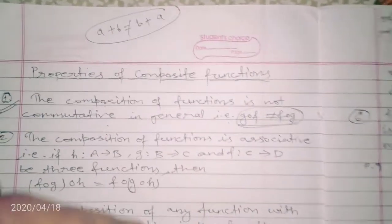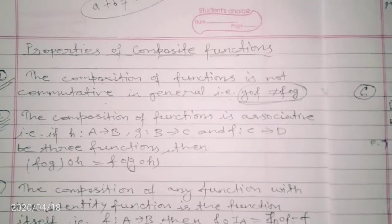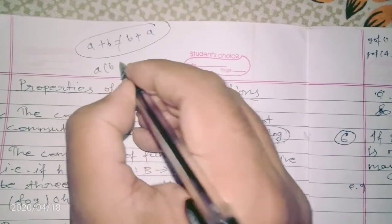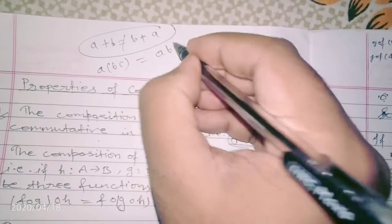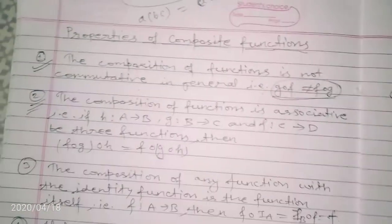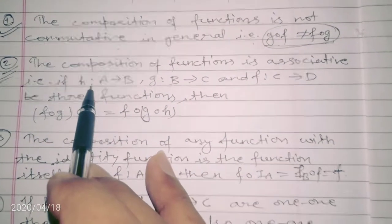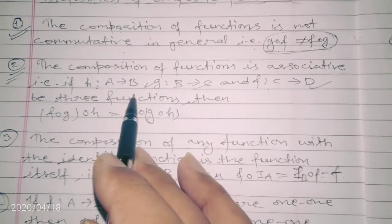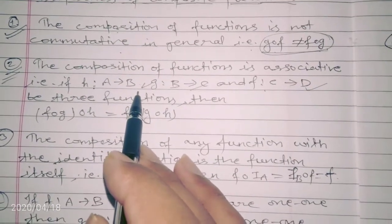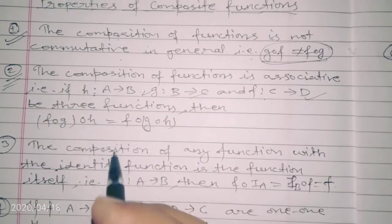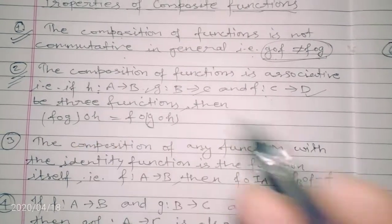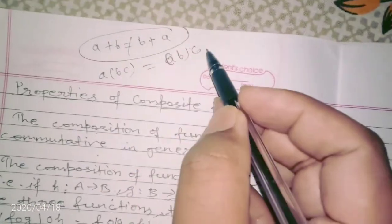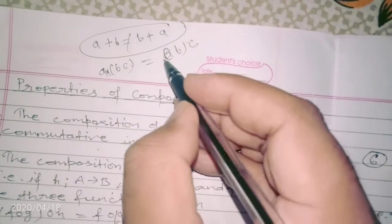The second property is the associative property. For multiplication, we know a×b×c equals (a×b)×c. Here, if we have three functions — h defined from A to B, g defined from B to C, and f defined from C to D — we need three functions to prove associativity. We already know that a×(b×c) equals (a×b)×c.